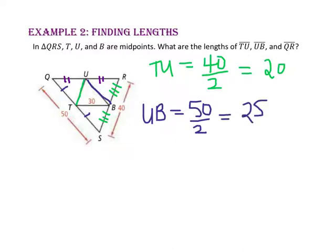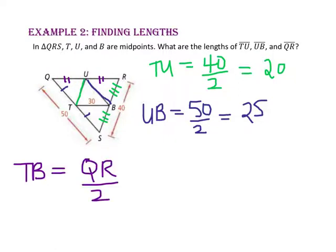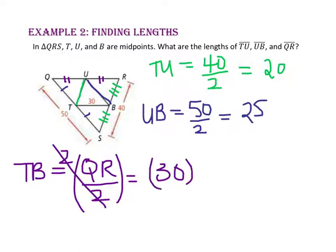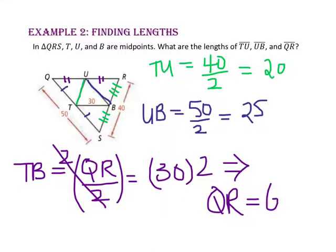And finally, since TB is a mid-segment, it is half of the length of the side it is parallel to, side QR. Since the length of segment TB is 30, then 30 equals half of segment QR. So to find the length of segment QR, multiply both sides by 2. The length of segment QR will equal 30 times 2, or 60.